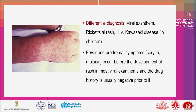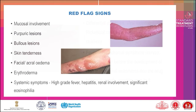Differential diagnosis includes viral exanthem, rickettsial rash, HIV, and Kawasaki disease. Fever and prodromal symptoms occur before the development of rash in most viral exanthems, and the drug history is usually negative. Red flag signs: mucosal involvement, purpuric lesions, bullous lesions, skin tenderness, facial or acral edema, erythroderma, systemic symptoms like high-grade fever, hepatitis, renal involvement, and significant eosinophilia.